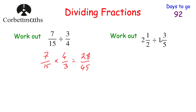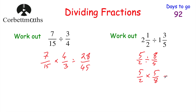For the next question — 2 and a half divided by 1 and 3 fifths. Let's make them both top-heavy: 2 times 2 is 4, plus 1 is 5, so it's 5 halves. Then 1 times 5 is 5, plus 3 is 8, so we've got 8 fifths. So 5 halves divided by 8 fifths. Now we multiply by the reciprocal of 8 fifths, which is 5 eighths. So 5 times 5 is 25, and 2 times 8 is 16. That's 25 sixteenths. How many 16s go into 25? That's 1 remainder 9, so the answer is 1 and 9 sixteenths.